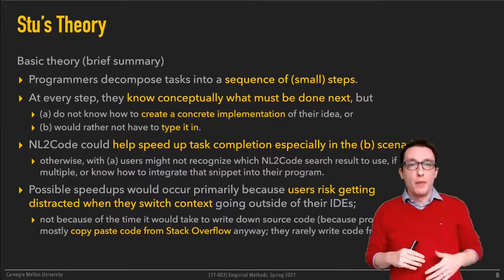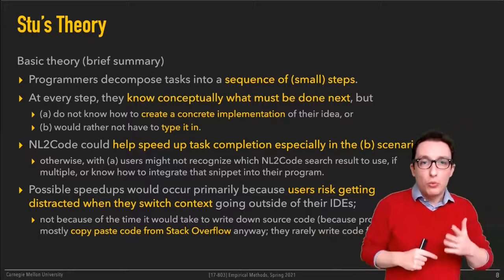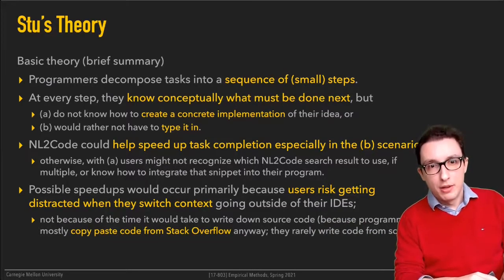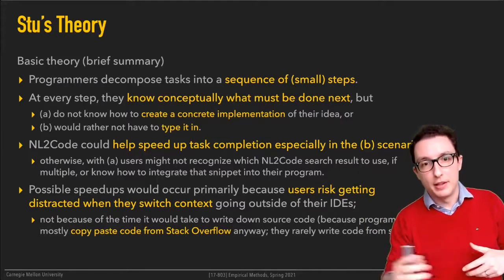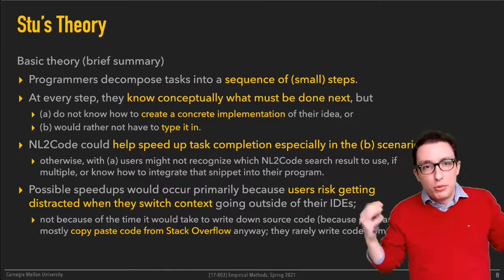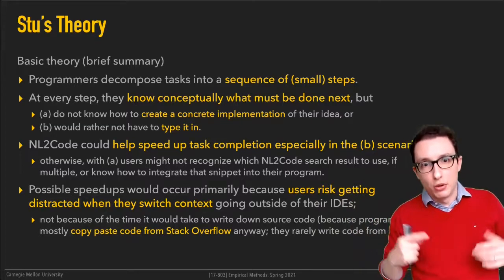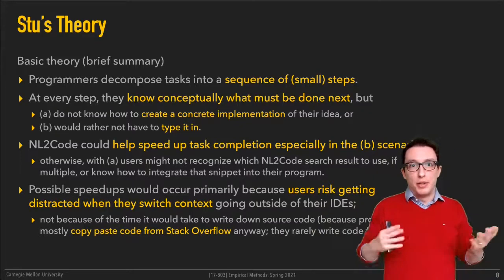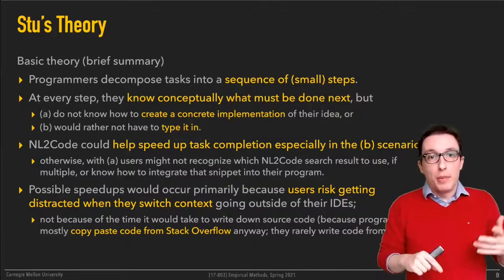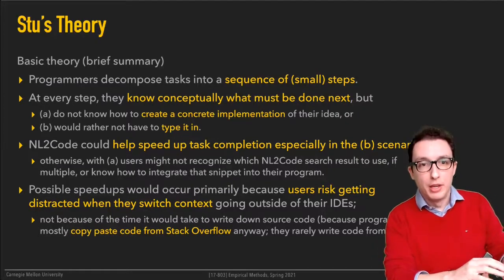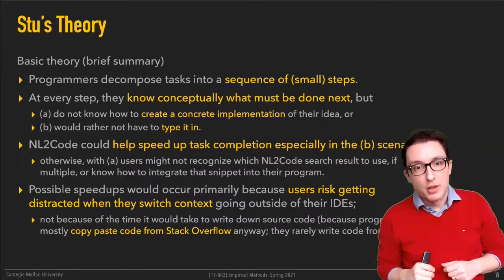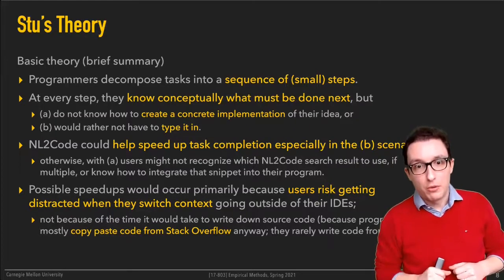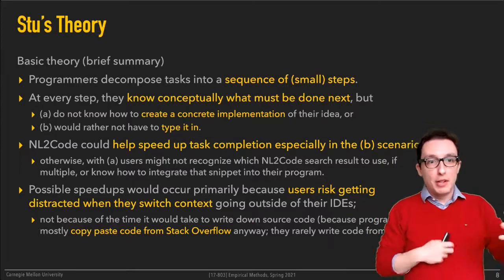It's because of the cost of context switching that you'd expect speedups — because people copy code anyway. It's not really about the time it would take to type code from scratch versus typing an English description of intent, because people don't really type code from scratch anymore — they look stuff up on the internet and copy it from Stack Overflow. The comparison here is essentially between doing this inside your IDE versus doing this with a search engine like Google and browsing through search results.